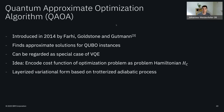As a brief overview: the quantum approximate optimization algorithm was first introduced in 2014 by Farhi, Goldstone, and Gutmann. It finds approximate solutions for QUBO instances and can be regarded as a special case of the variational quantum eigensolver. The idea is to encode the cost function as a problem Hamiltonian H_C and use the variational method to find the ground state, which corresponds to the optimal solution. The QAOA variational form is a layerized quantum circuit based on a trotterized adiabatic process — I'll explain these terms in more detail shortly.